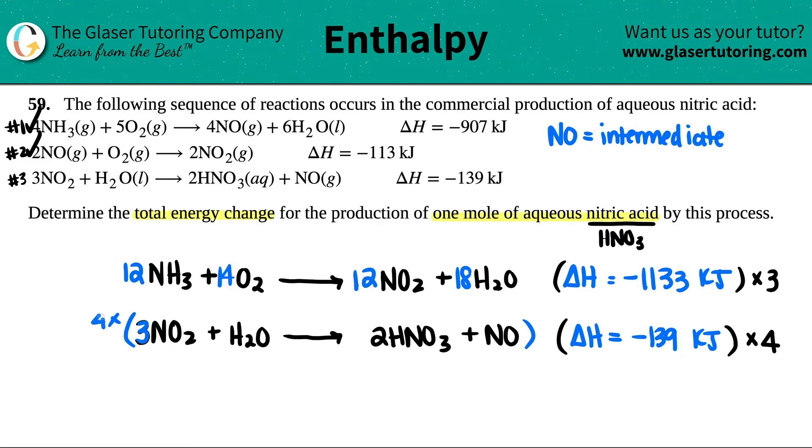Let's do the bottoms. I'm going to do four times all the coefficients. Four times three is 12 NO2. Four times one is just a four, so I'm just going to put a four H2O here. Four times two is eight HNO3. And then four times one, I'm just going to put a four NO here.